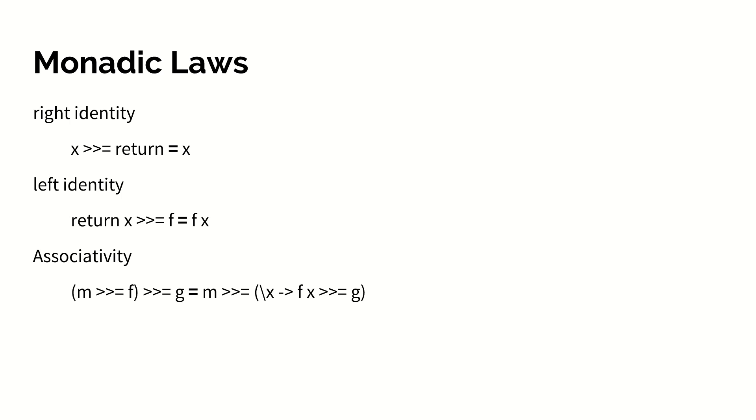Left identity is saying that if we use return to put x into a structure and then bind that with some function f, then we essentially just end up with f applied to x. The law of associativity is simply stating that the grouping of our bind actions should not affect the final value.